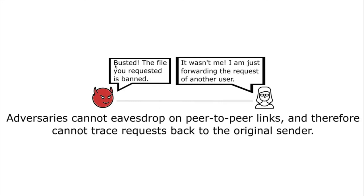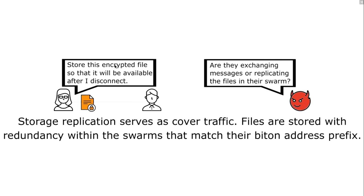All of the links are end-to-end encrypted, so adversaries cannot eavesdrop on the peer-to-peer links. If a message exits the network through a link that an adversary can observe, we make it such that the user can plausibly deny it wasn't herself — she was just forwarding a message from another user. We also aim to provide both routing and storage, which has interesting anonymity properties, because users can have a constant flow of traffic with storage replication that serves as cover traffic. The way we store files with redundancy allows users to insert something, then go offline, and it will still be available — similar to the Freenet anonymous publishing model.